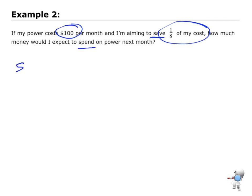First, let's start off with thinking about how much we're going to save each month. We're going to save 1/8 of the power. There's that word 'of'. So 1/8 of $100. If I put that into my calculator, it's going to give me 12.5. So each month I'm expecting to save $12.50.